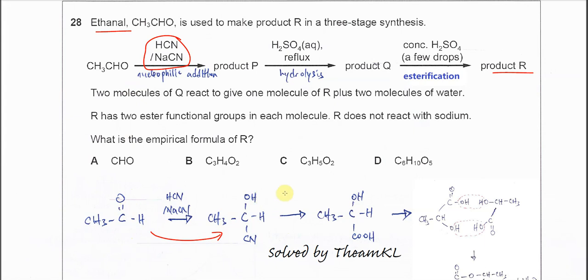After that, this cyanohydrin undergoes hydrolysis because it's acid with reflux. This will break and this carbon will form COOH, and of course it will form product Q.